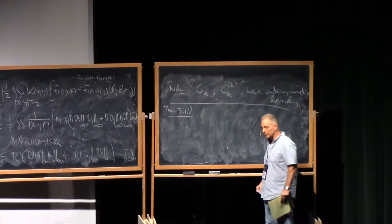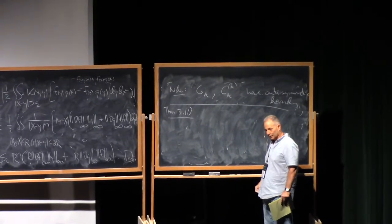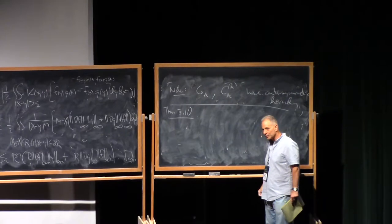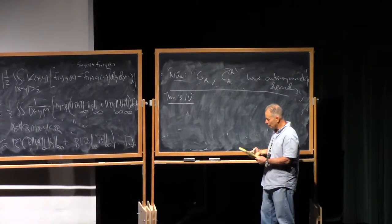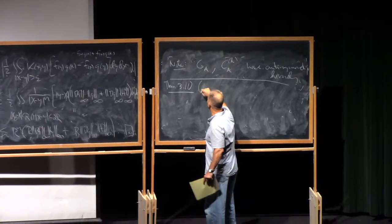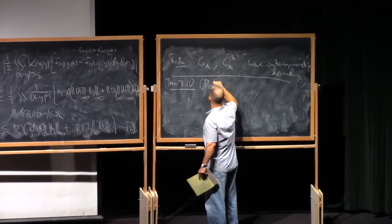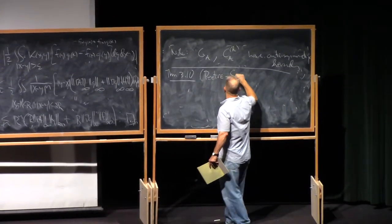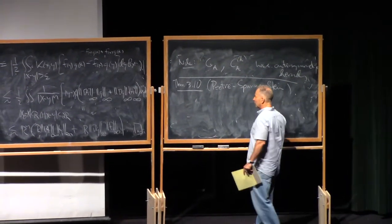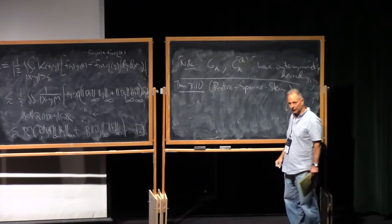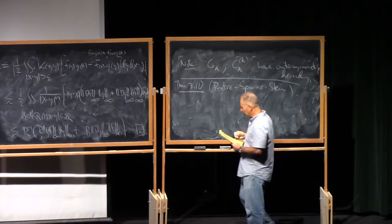Another theorem, which in a way can be thought of as kind of a converse to the T of one theorem, a strong converse, but actually much easier and preceded it by a number of years. There's a theorem due independently to Petrie, to Spann, and to Stein. They all found this theorem independently around the same time.